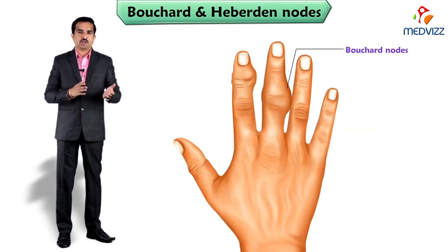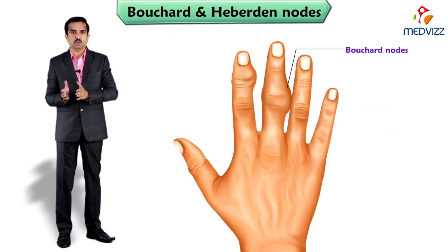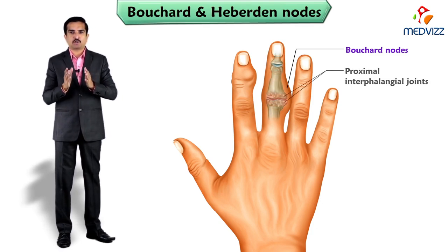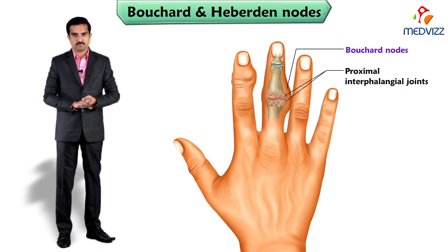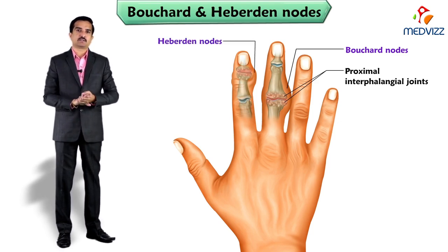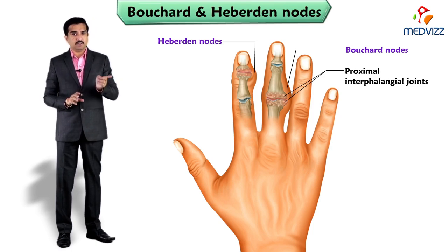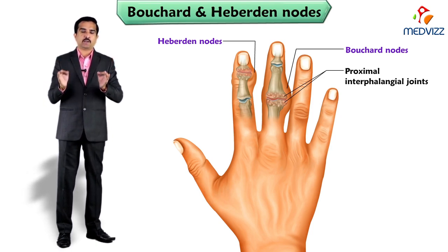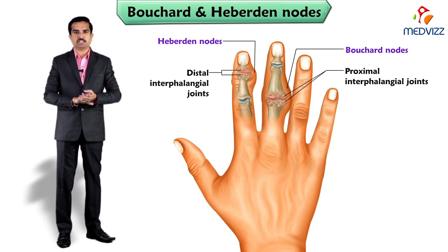Bouchard nodes are bony outgrowths or nodules especially found over the proximal interphalangeal joints of the hands. Heberden nodes are similar to Bouchard nodes but are located over the distal interphalangeal joints.